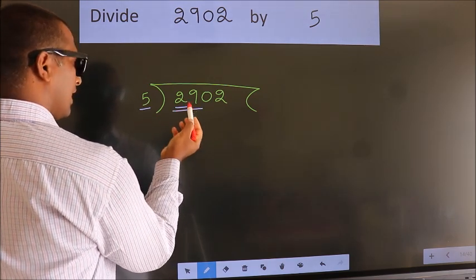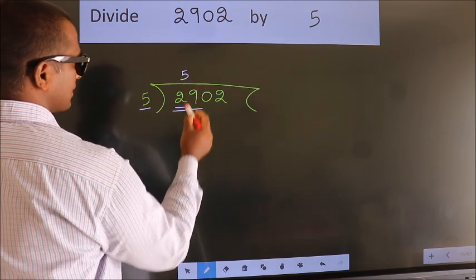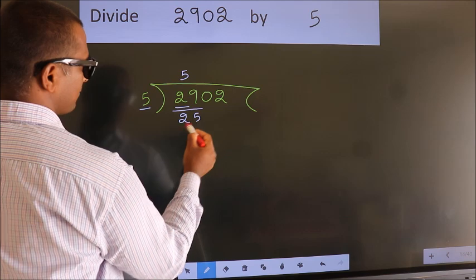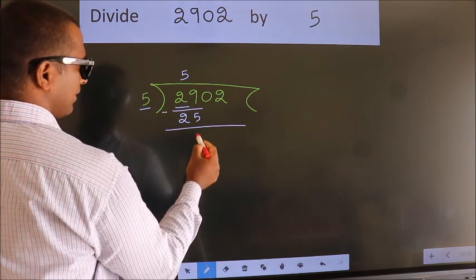29. A number close to 29 in the 5 times table is 5 times 5 equals 25. Now we should subtract. We get 4.